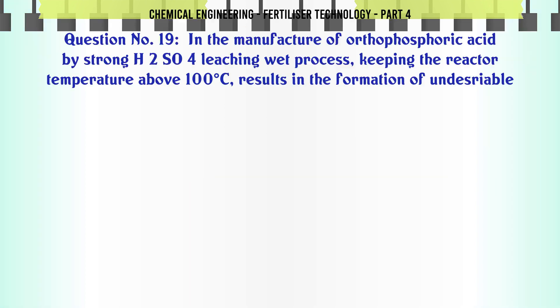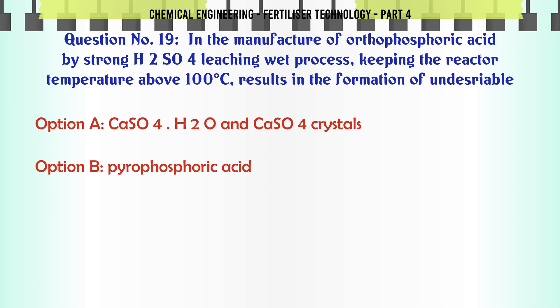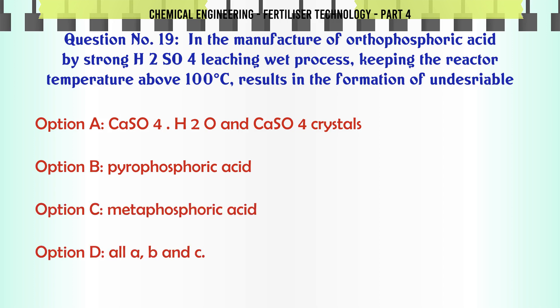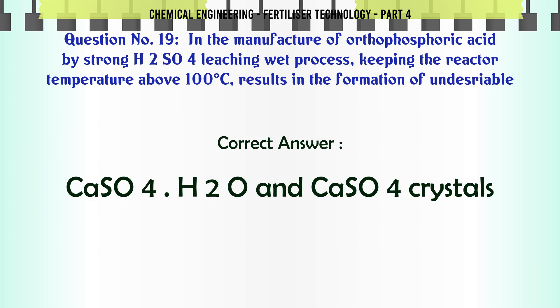In the manufacture of orthophosphoric acid by strong H2SO4 leaching wet process, keeping the reactor temperature above 100°C results in the formation of unscreeable: a. CaSO4·H2O and CaSO4 crystals, b. pyrophosphoric acid, c. metaphosphoric acid, d. all of A, B and C. The correct answer is: CaSO4·H2O and CaSO4 crystals.